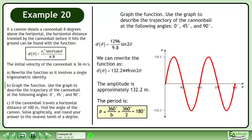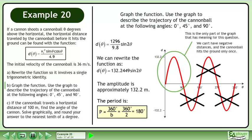Draw the graph. This is the only part of the graph that has meaning for this question. We can't have negative distances, and the cannonball hits the ground only once.